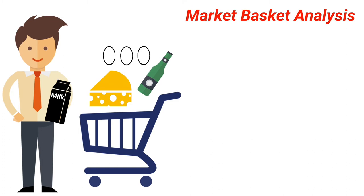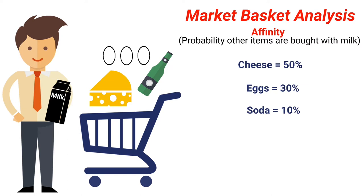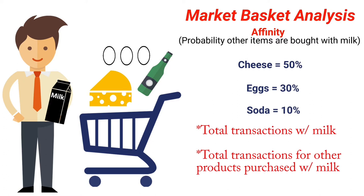I'm going to show you how to do this type of analysis in MicroStrategy using relationship filters. One of the metrics we'll be creating today is affinity — the probability or likeliness that a particular item is purchased with another item. For example, maybe there's a 50% chance that cheese is purchased with milk, a 30% chance that eggs are purchased with milk, and a 10% chance that soda is purchased with milk. To calculate affinity in MicroStrategy, we'll create two metrics: the total number of transactions containing milk, and the total number of transactions for other products also found in transactions with milk. Lastly, we divide these to calculate the affinity.